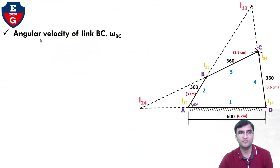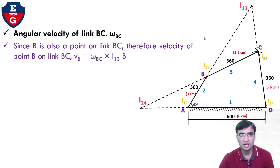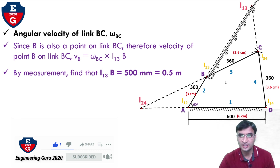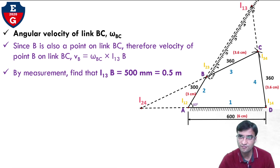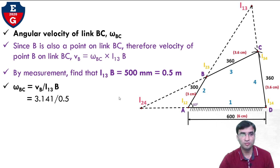We also find the angular velocity of link BC, that is omega_BC. Since B is also a point on link BC, the velocity of point B on link BC equals omega_BC multiplied by the distance I13 to B. By measurement, I13-B is 500 mm, which converts to 0.5 meters. So omega_BC equals V_B divided by (I13 to B) equals 3.141 divided by 0.5, giving omega_BC equal to 6.282 radians per second.